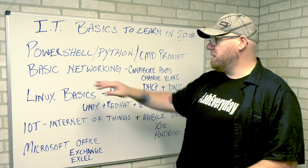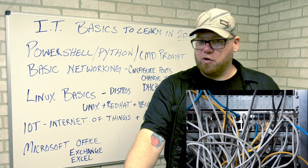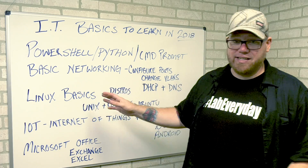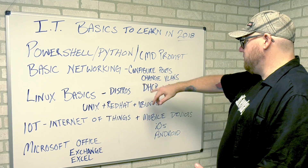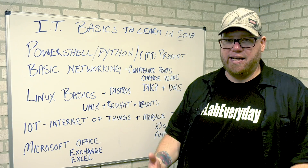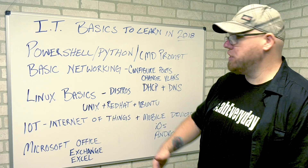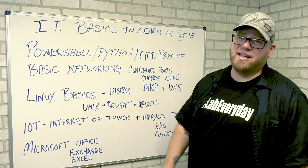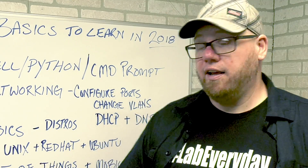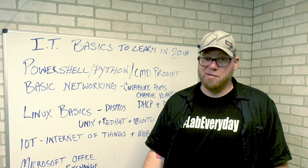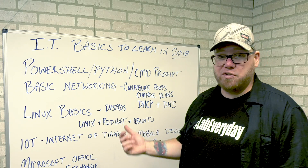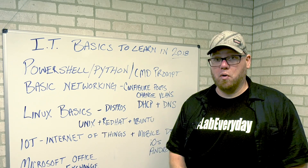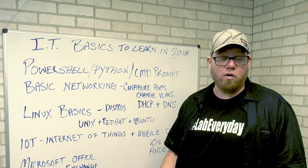The next thing is basic networking. You don't need to be a network administrator or go out and get your CCENT or Network Plus. But there are a lot of basics you can learn. For example, configuring ports — logging into a switch and configuring a port for what you need — and changing VLANs, which is something really simple to do. You can find plenty of videos on YouTube showing how to configure a port and how to change the VLAN for a given port.